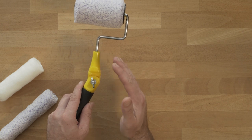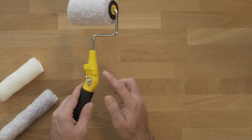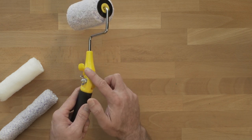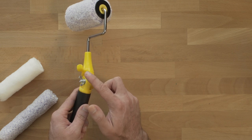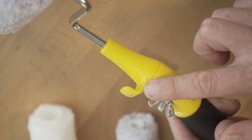A couple of other helpful features about the Hyde mini roller frame: it has a built-in bucket hook right here. This is going to allow you to rest it on the edge of a bucket or a paint tray without it sliding into the paint.